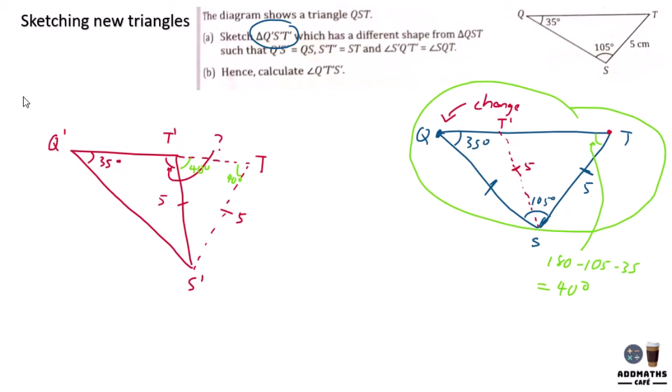So you are required to find this angle over here. So what is this? This is 180 minus 40 degrees, which will give you 140 degrees. This is angle Q'T'S'. So this is the answer to this question. So that's all for this chapter, thank you.